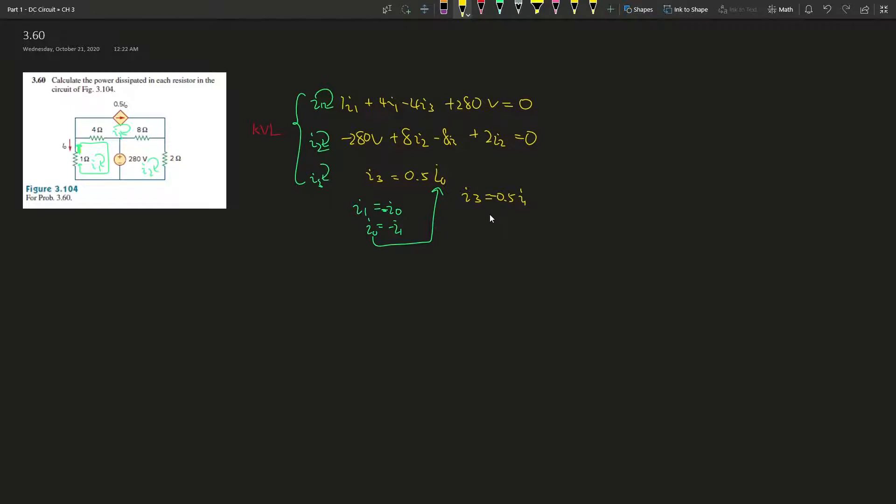Now we're going to solve for all the unknowns and we should be able to do it because we have four equations and we have four unknowns: I1, I2, I3, and I0. When you have equal or more amount of equations than your unknowns then you should be good to go with independent equations.